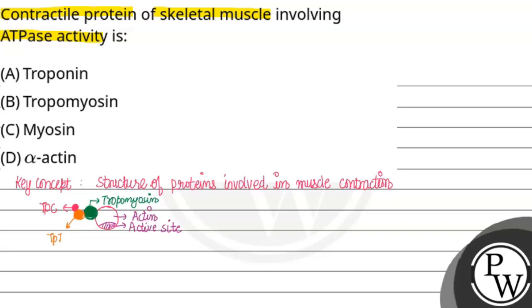Then there is a subunit called TPI, which masks the active site of actin. This is TPI.